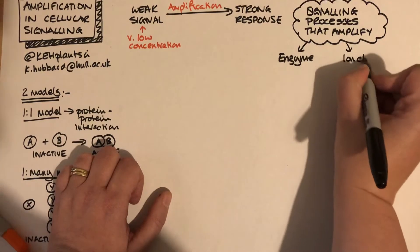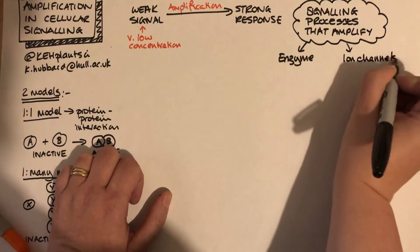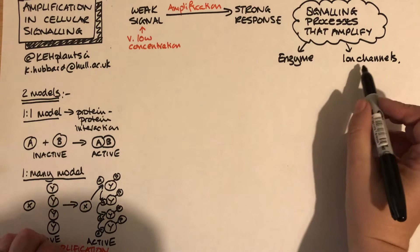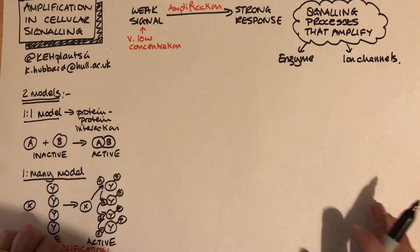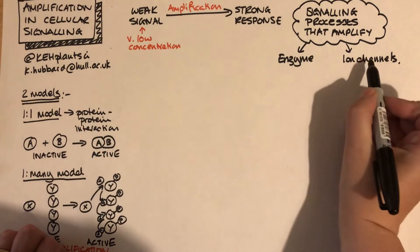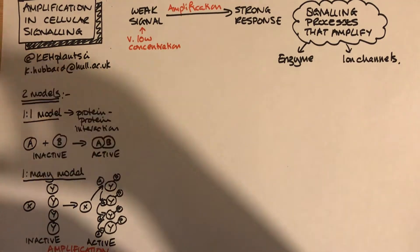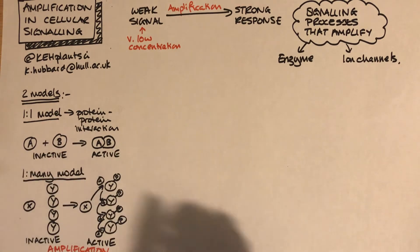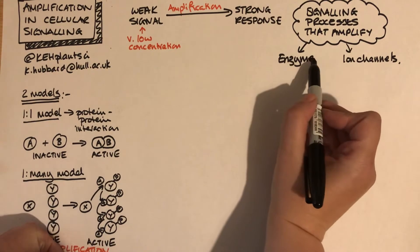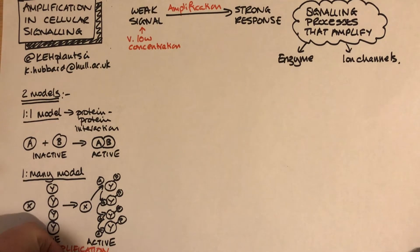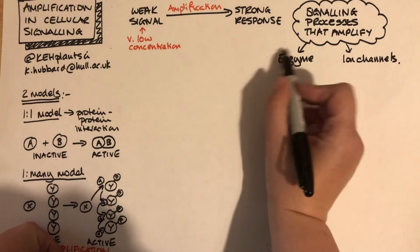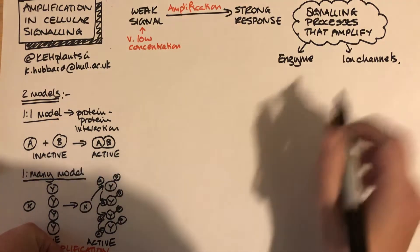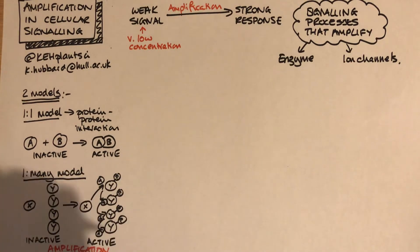We can also have ion channels as a source of amplification. If you activate one ion channel protein, you might have 10,000 ions coming through that channel. So one channel protein gives you 10,000 calcium ions — that's a massive source of amplification. If you're looking at a pathway and you see an enzyme like phospholipase C or adenylate cyclase, those are all enzymes so they will amplify. Similarly, anywhere there's a calcium channel, that will almost certainly amplify.